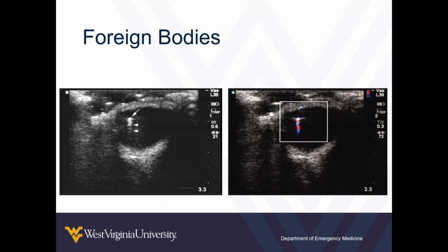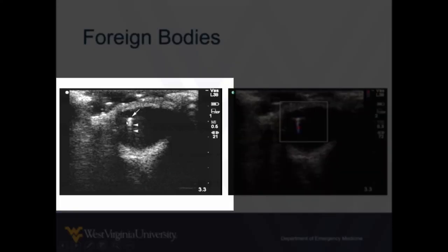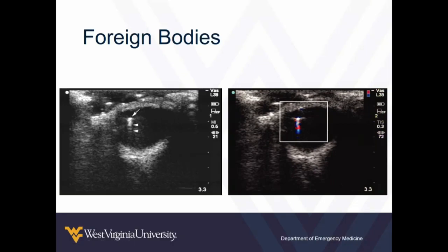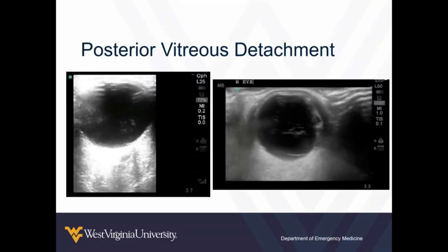Some other posterior problems are foreign bodies. Now, if you thought a foreign body was really there, maybe you shouldn't have stuck the probe on there, because this is going to penetrate the globe — a ruptured globe. But here's an example of an ocular foreign body. Like kidney stones and other things, you put color on them and they get this little twinkle artifact, which is interesting. Those are easy to find — maybe you shouldn't have found it, but they're cool to look at.